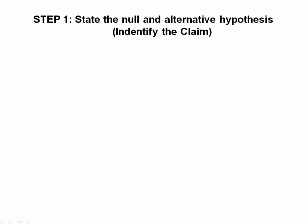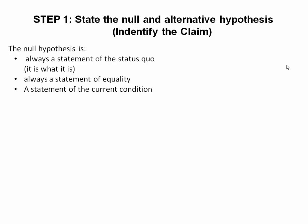Step one: state the null and alternative hypothesis. First, we have to understand what the null and alternative hypothesis entail. The null hypothesis is always a statement of the status quo — in other words, it is what it is. For example, if the average age of a student at St. Leo University is 35 years old, then that's what it is. The null hypothesis is a statement of equality and a statement of the current condition.